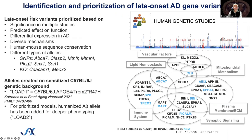We initially prioritized late onset risk variants based on significance in multiple studies, predictive effect on function, differential expression in Alzheimer's disease, and diverse mechanisms. We can group these risk variants by whether they're vascular, metabolic, synaptic, immune, or lipid-related. We didn't want the vast majority in one group, so we made a conscious effort to have at least a couple of hits in each pathway — with the idea that down the road we might combine hits across immune, lipid, and vascular to make a multi-allelic model that more closely models the human condition.